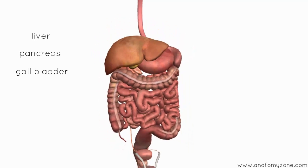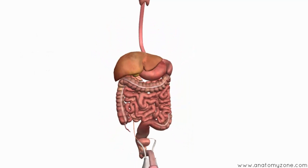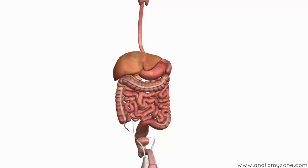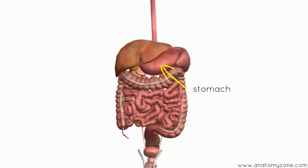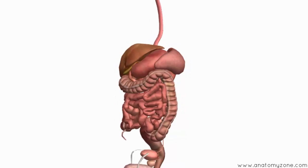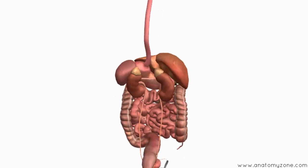So the digestive system consists of this long tube running from the mouth to the anus, and that includes the stomach. And then you've got the three accessory organs of digestion: the liver, the gallbladder, and the pancreas, which sits behind the stomach.